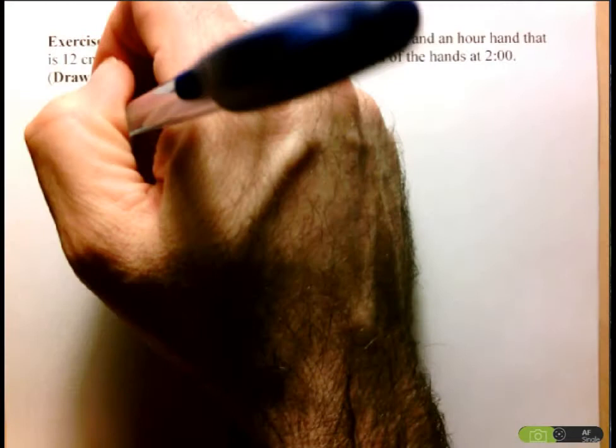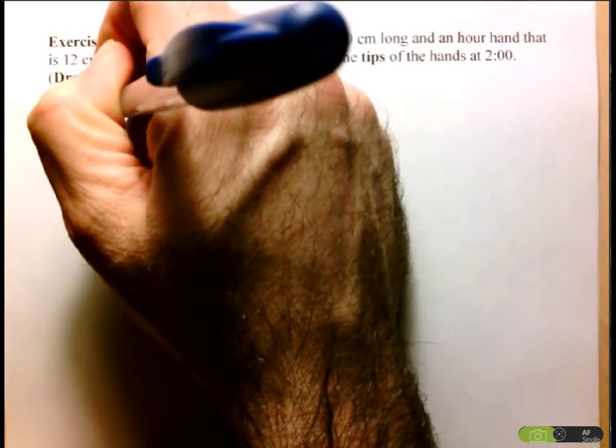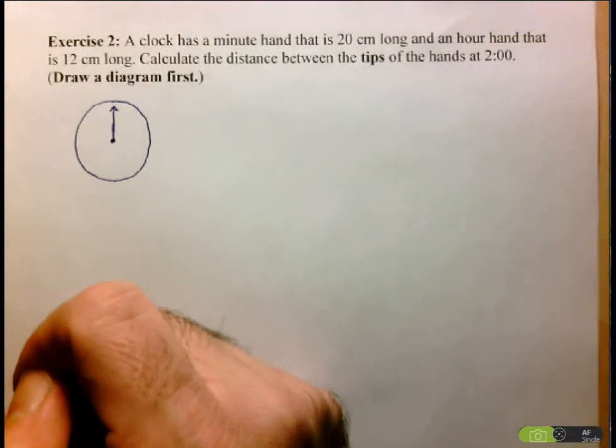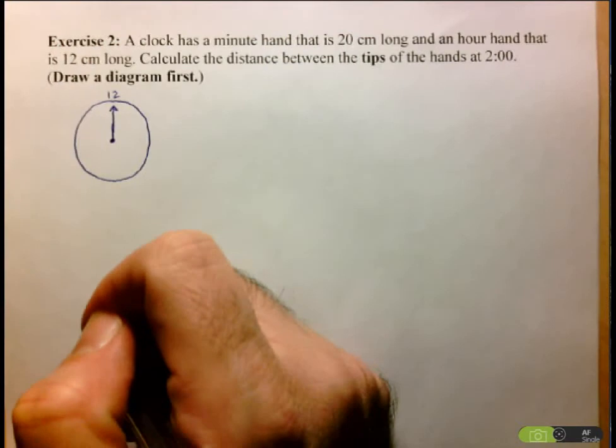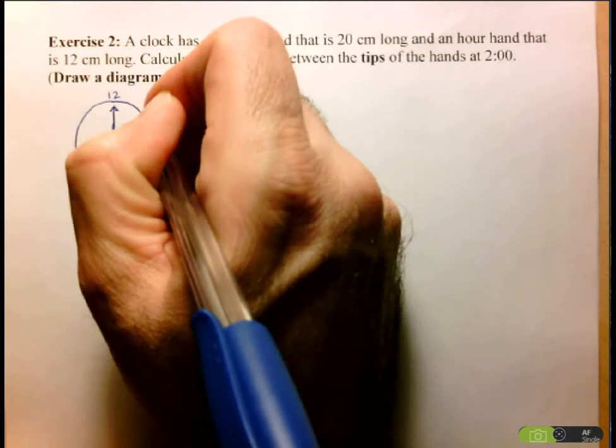So at 2 o'clock we've got that the minute hand will be facing the 12 o'clock position, and then the hour hand will be facing the 2 o'clock position.